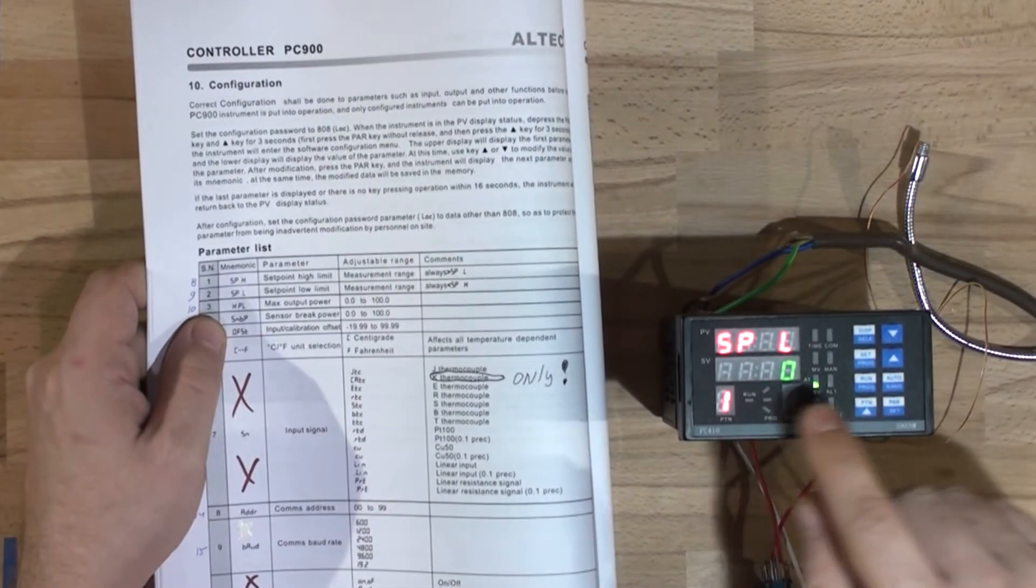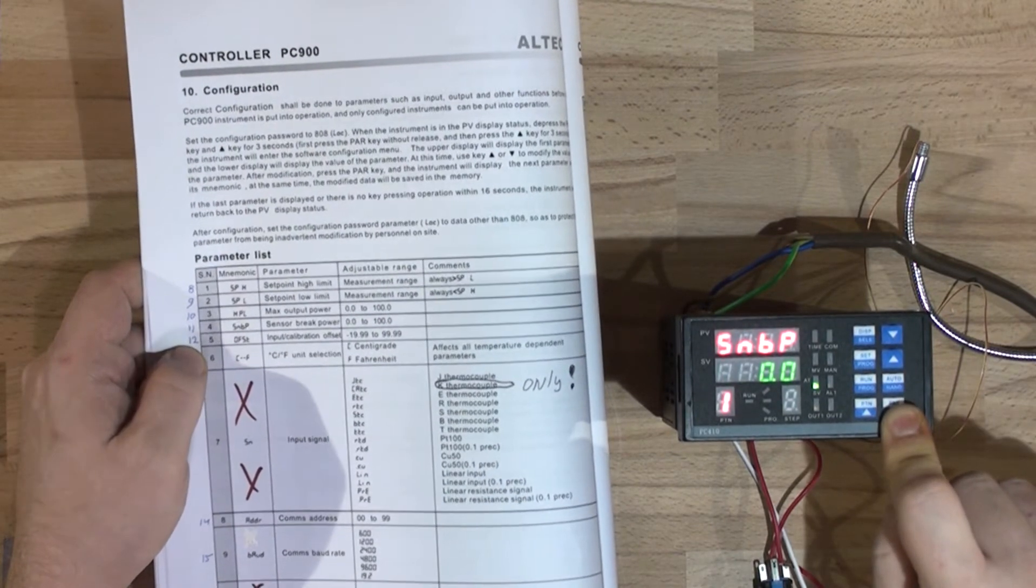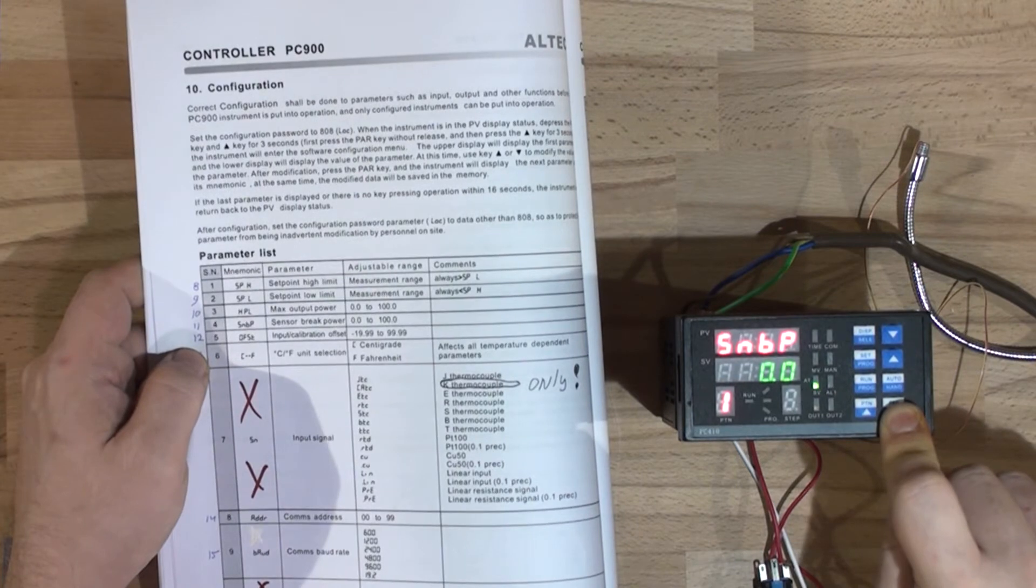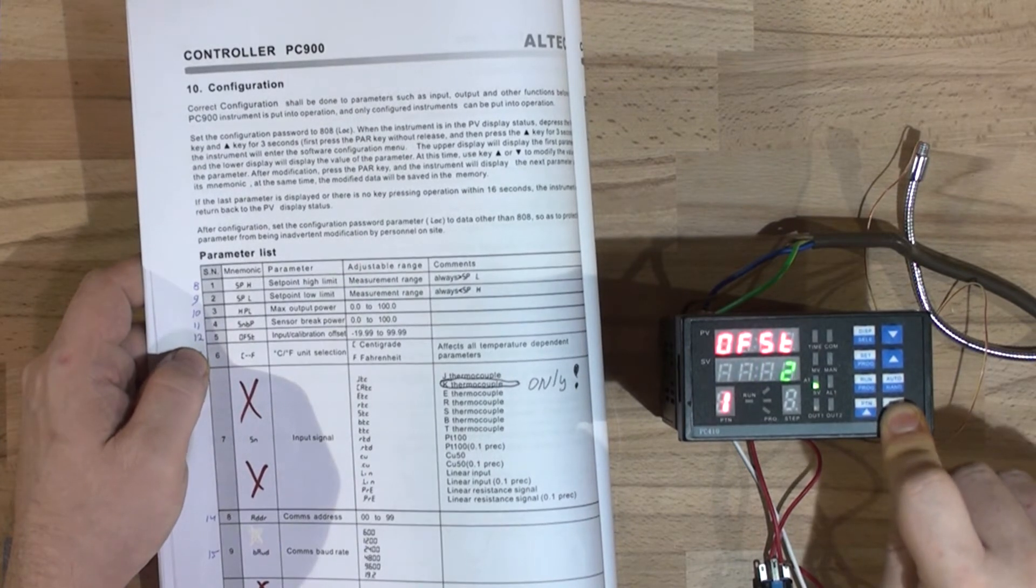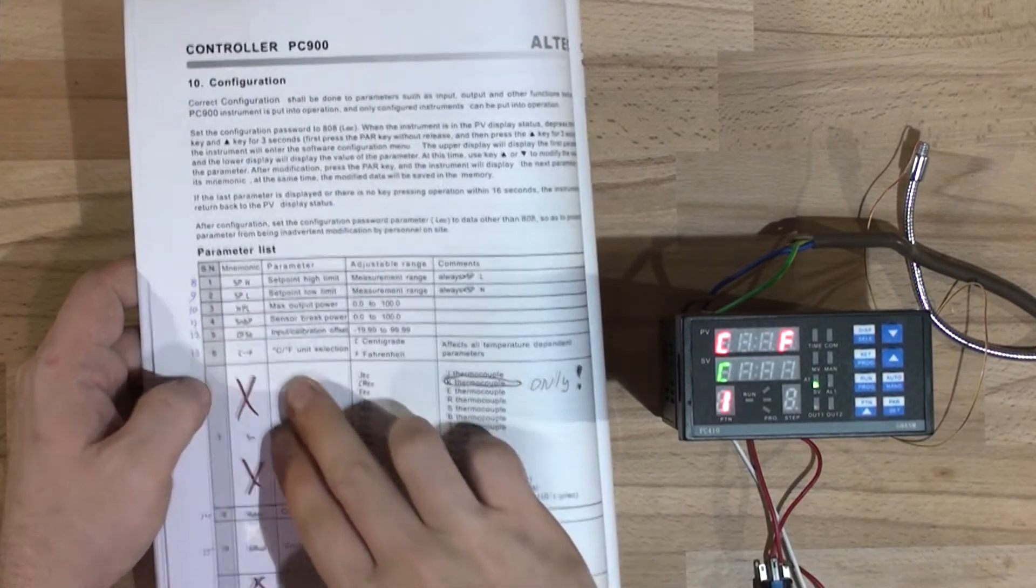Next we got SPH, which continues on the other menu that's supposed to be there but it's not. Then we got SPL, HPL, SNBP, and offset.